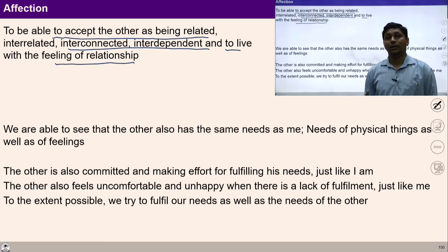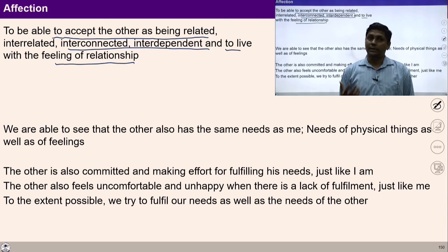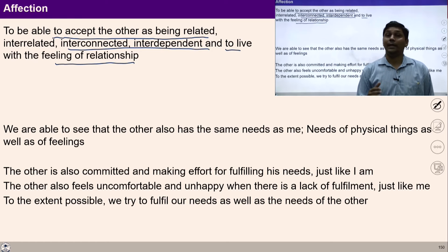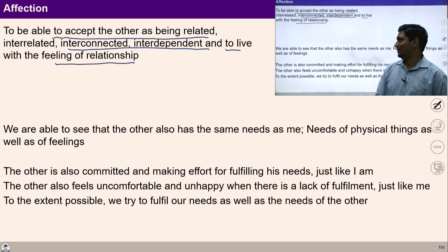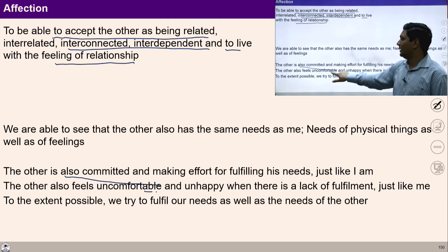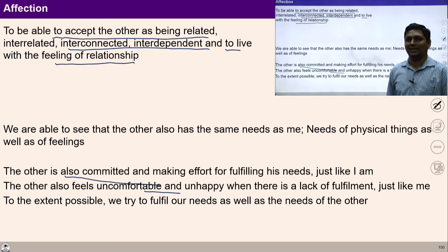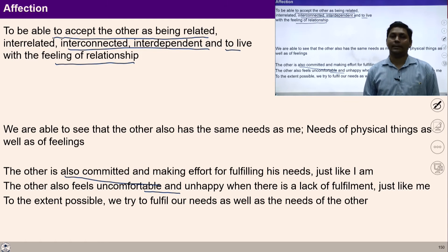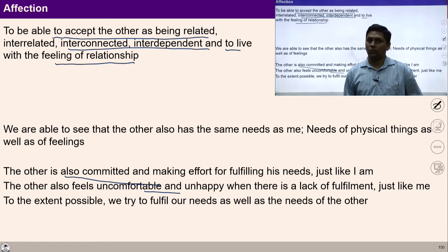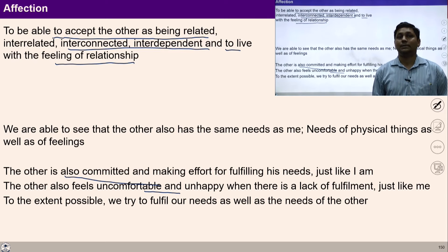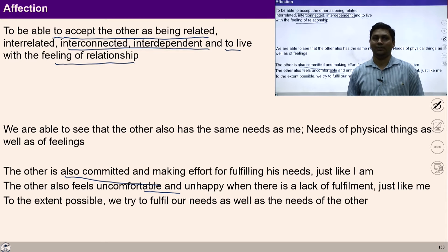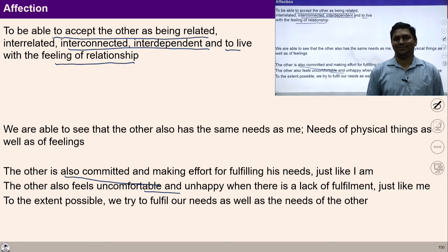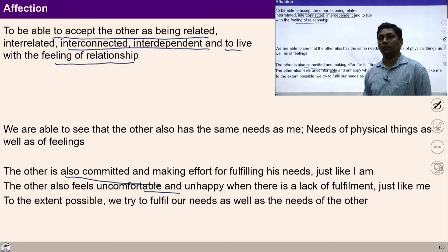If our conscious activity is run on the basis of non-accumulation and affection, we do not think of exploiting the rest of nature. If we understand non-accumulation and affection, then exploitation of nature and other human beings is not possible. In fact, I become complementary to human beings and the rest of nature. I cannot think of exploiting others.